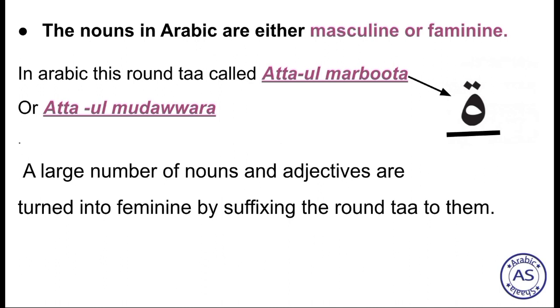Arabic में, अगर कोई भी word है, अगर उसके last में यह symbol of feminine add कर देते हैं, तो वो word masculine से feminine हो जाता है। कैसे? Example से देखते हैं।